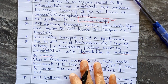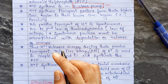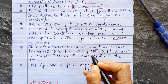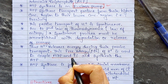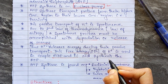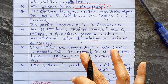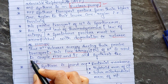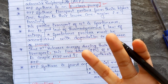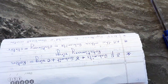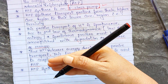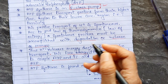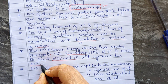The passive transport of protons through ATP synthase releases free energy. This free energy is used to couple ADP and inorganic phosphate (Pi) to synthesize ATP. So: ADP + Pi → ATP. The energy that drives this reaction is the free energy released during the transfer of protons from higher to lower concentration.